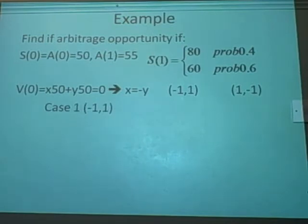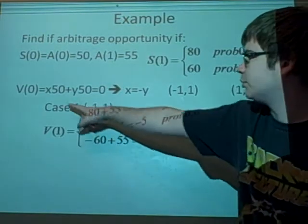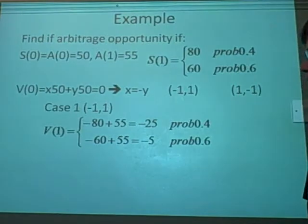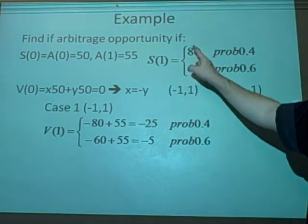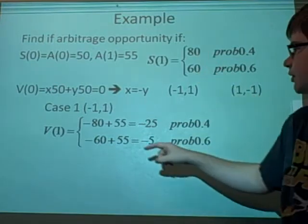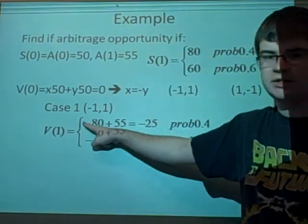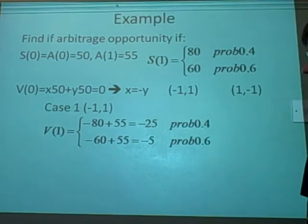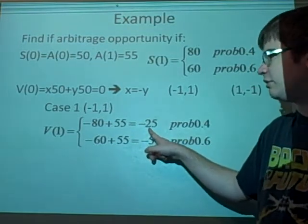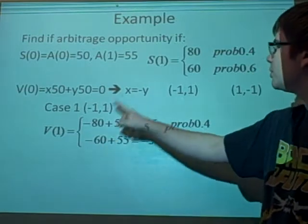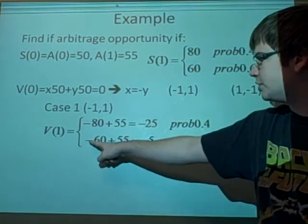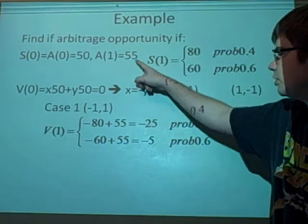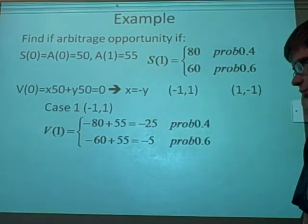We'll look at this first case of minus 1, 1. The initials are 0 because minus 1 times 50 plus 50 is 0. S1 is going up to 80 with probability 0.4. Because we've got minus 1 stock, we'll put minus 80 plus 55 because our bonds are going up to 55. Our initial investment here is minus 25, so we've actually lost money. It also goes to 60, so with minus 60 plus 55, this is minus 5. This isn't an arbitrage situation.